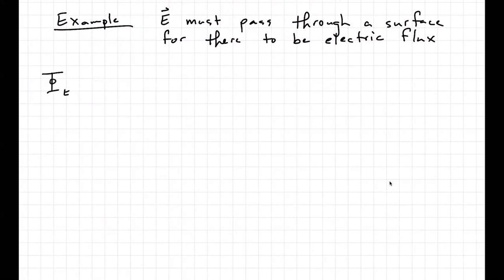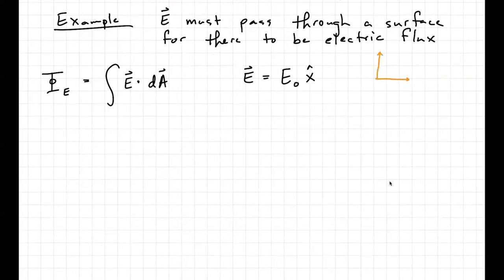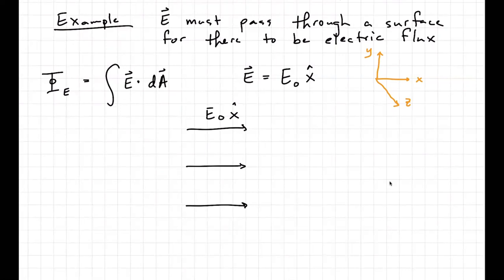Let's do a problem and see how we can do this. So electric flux is the integral of E dot dA. Let me say I've got some region of space where there's an electric field — it's going to be a constant field: E₀ in the x̂ direction. I'm going to define my space to have X that way, Y this way, and Z coming out perpendicular, so we've got a three-dimensional Cartesian coordinate system. Here goes my electric field filling the whole space — E₀ x̂.